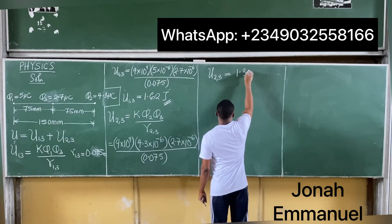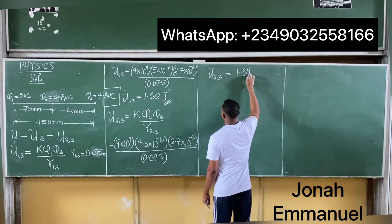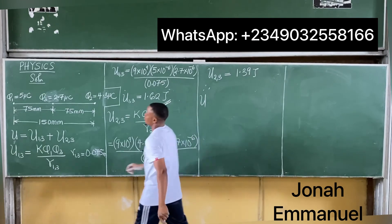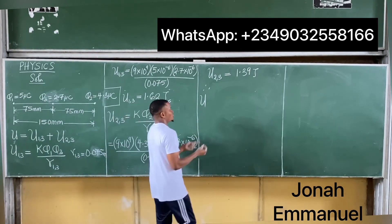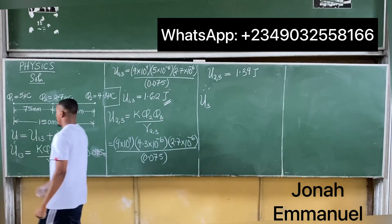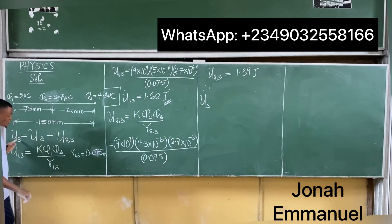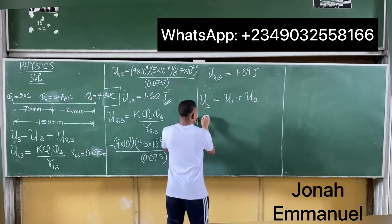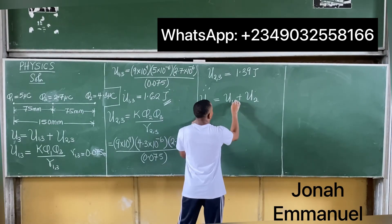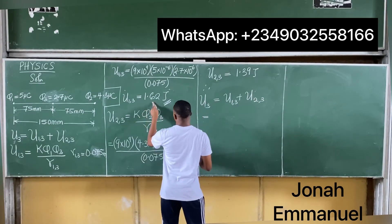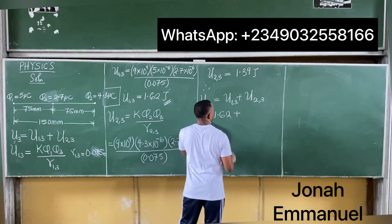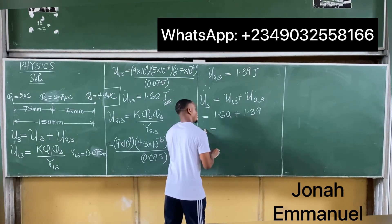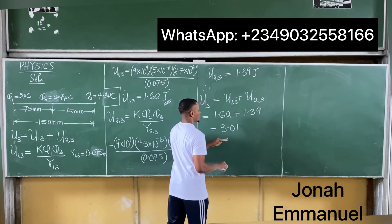U23 ≈ 1.39 joules. Therefore, the total electrostatic potential energy on charge q3 is U3 = U13 + U23 = 1.62 + 1.39 = 3.01 joules.